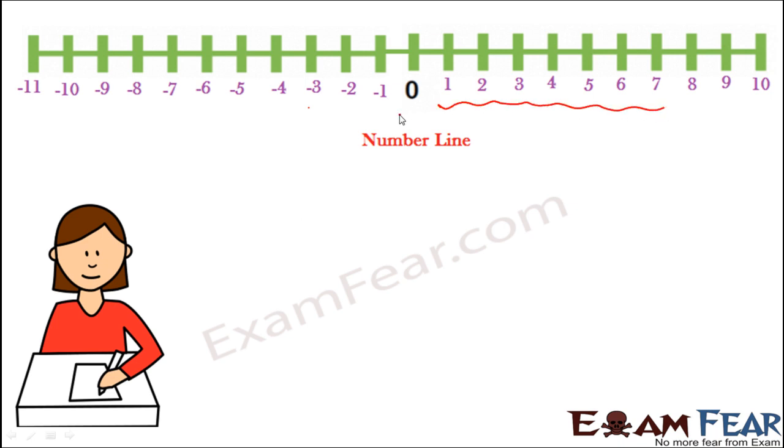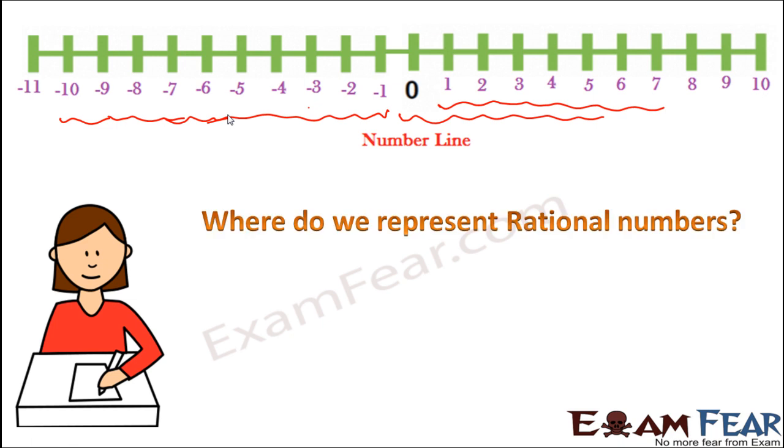We can also locate the whole numbers, that is 0, 1, 2, 3, 4 and so on. We can locate the integers as well where we see the negative numbers and the positive numbers both present on the line. But where are the rational numbers? We do not see them on the number line as such. We did not see them till now.